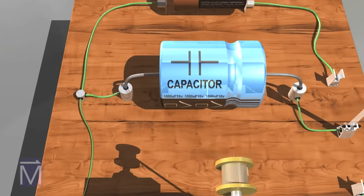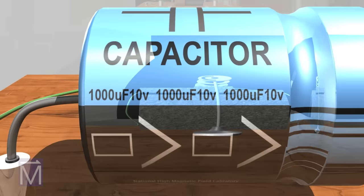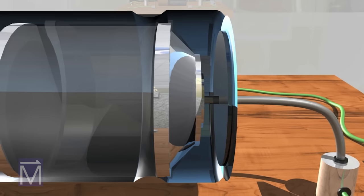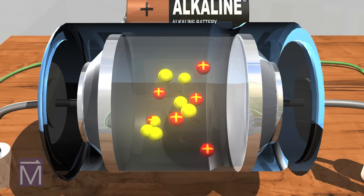Like a battery, a capacitor has two terminals, positive and negative. Inside the capacitor, the terminals connect to two metal plates separated by an insulator that keeps the plates from touching each other and allows them to hold opposite charges, maintaining an electric field.